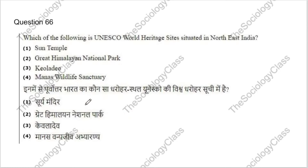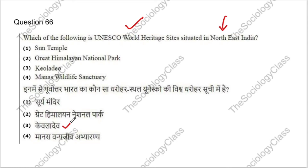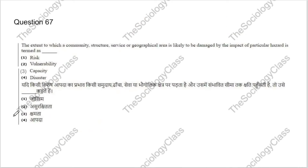Question 66: Which of the following is a UNESCO World Heritage Site in Northeast India? Options: Sun Temple, Great Himalayan National Park, Keoladeo, or Manas Wildlife Sanctuary. The correct answer is D — Manas Wildlife Sanctuary.